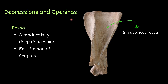Now depressions and openings. Fossa — a moderately deep depression. For example, fossa of the scapula. You can see: this one is called the infraspinous fossa of the scapula, and this one is called the supraspinous fossa of the scapula.